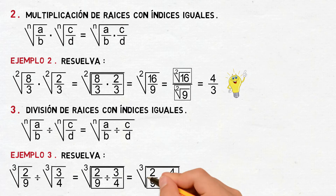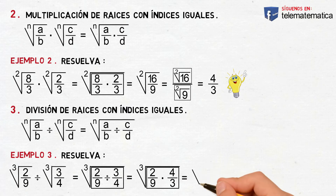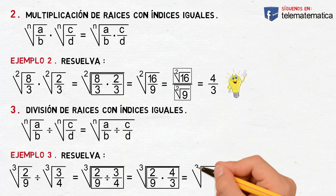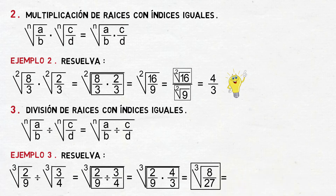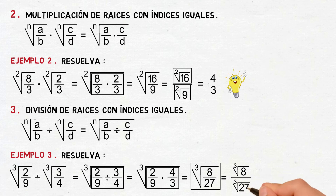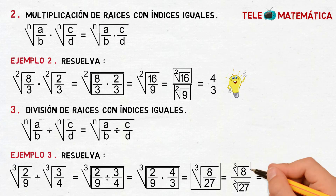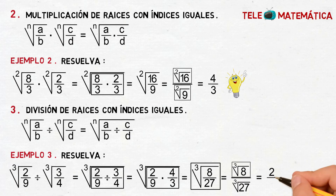Resolviendo la multiplicación de números fraccionarios, esto va a ser igual a la raíz cúbica de 8 veintisieteavos. Luego, aplicando la propiedad de la raíz enésima de un número racional, esto va a ser igual a la raíz cúbica de 8 dividido para la raíz cúbica de 27. Como resultado, la raíz cúbica de 8 es 2, y la raíz cúbica de 27 es 3.